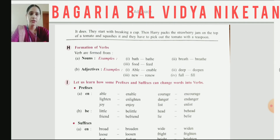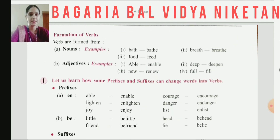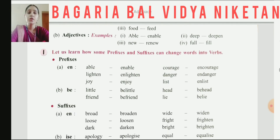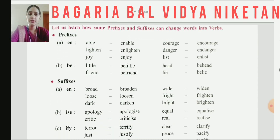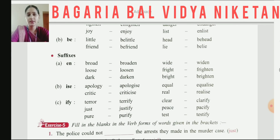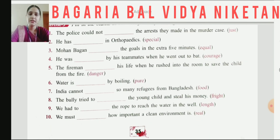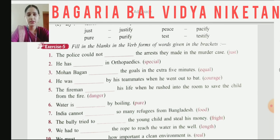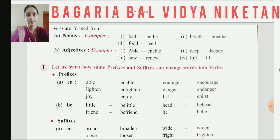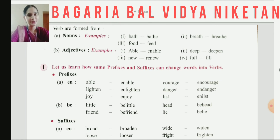Then we have the formation of verbs — how verbs are formed from nouns and adjectives. Some examples are given here using prefixes and suffixes: adding '-ize', '-en' at the beginning or end. These examples are given. You only need to do three exercises in your verb chapter, because the remaining exercises are related to tenses — when we study tenses, we will solve those exercises. So this is it for today, thank you everyone.